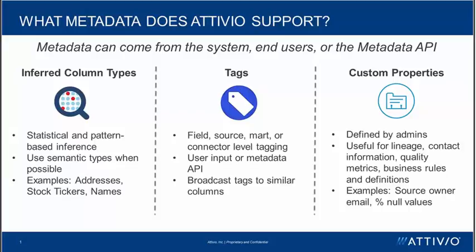Some examples of this are detecting addresses, stock tickers, names, and social security numbers. This can be really useful for a number of different reasons, from searching to data governance. But metadata comes from more than just the system-generated column type inference.